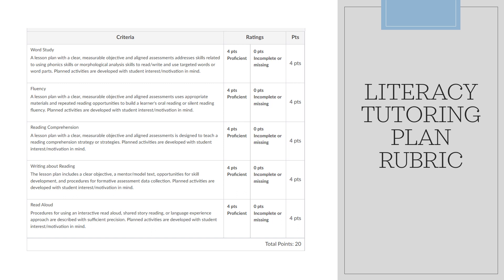The rubric for the literacy tutoring plan is linked on Canvas for the WFORT alternative. You're required to get a score of at least 16 out of 20 on the rubric. The components evaluated are really the individual lessons that you develop. There will be five lessons in the literacy tutoring plan: word study, which can be data-based vocabulary instruction, phonics, or phonemic awareness instruction; reading fluency; reading comprehension; writing about reading; and a read aloud.